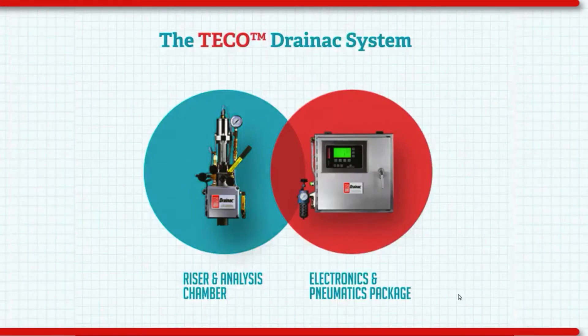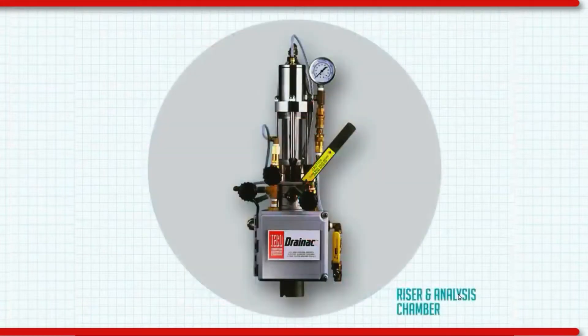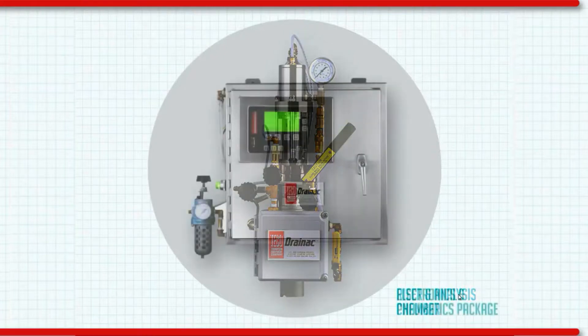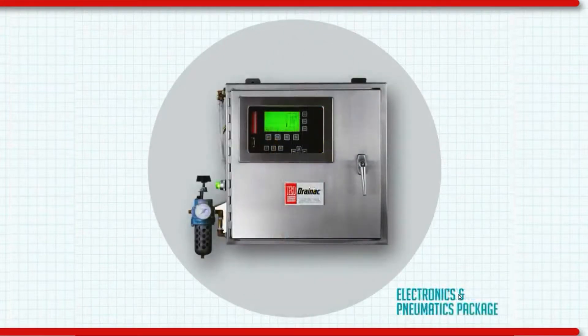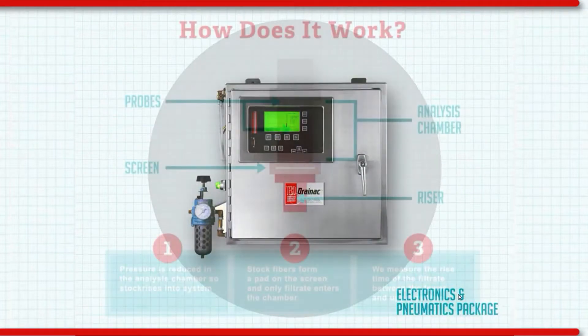There are two components to a Draenec, the analysis riser and the electronics enclosure. This is the analysis riser. It's the component that samples your stock and performs the freeness analyses. This is the Draenec control enclosure. It houses the various electronics and pneumatic packages.